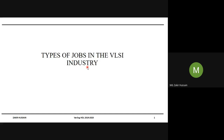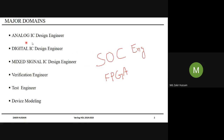The types of jobs in the real-life industry are somewhat like this. Analog IC design engineer — this is one domain where people can look for jobs. Digital IC design engineer — this is another domain. Mixed signal IC design engineer is another domain. Verification engineer is another domain. Testing engineer is another domain. Device modeling is another domain.